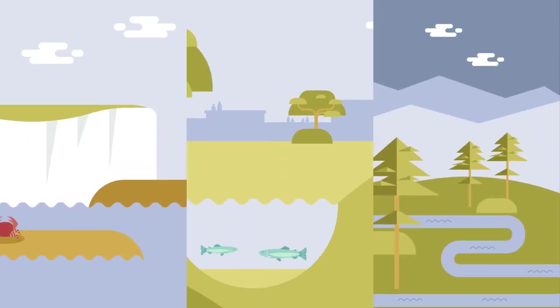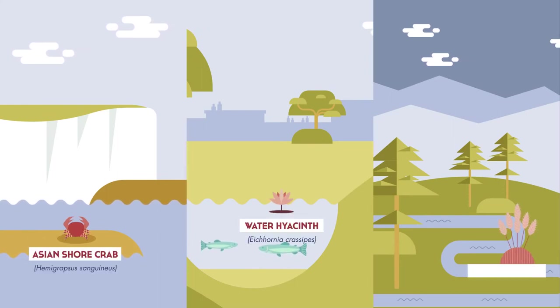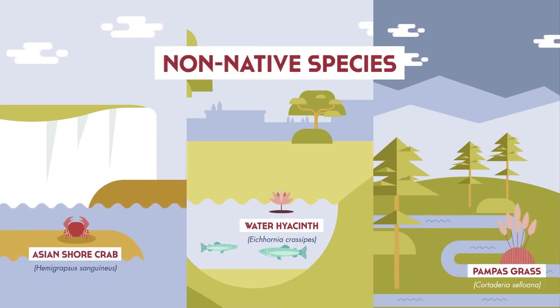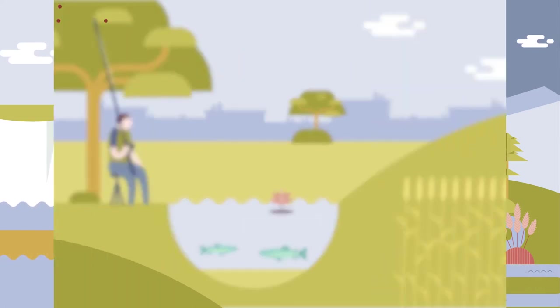When a species is introduced to an area outside its native region, it is termed a non-native species or alien species. Although many of these plants and animals, or the pathogens they might carry, will not survive in the new environment,